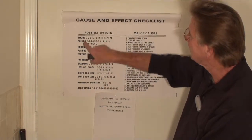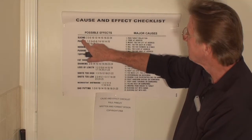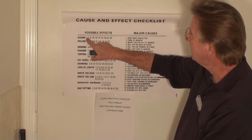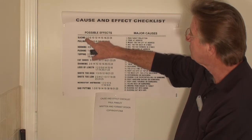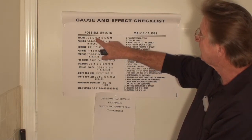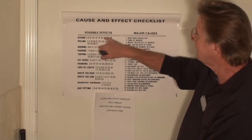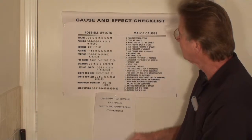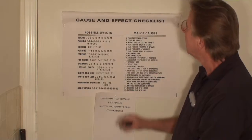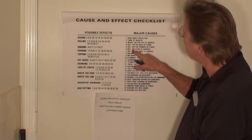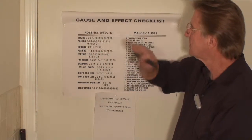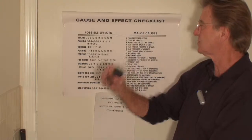So, anyway, I'm thinking, well, if I eliminate — if I check out 2, 3, 5, 10, 13, 14, and on — there are 10 different possible causes here, and if I go through them one at a time, I should be able to eliminate my problem with slicing.